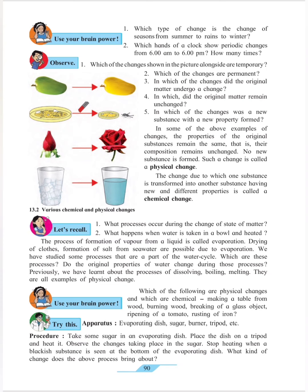The process of formation of vapor from a liquid is called evaporation. When you heat water, some amount of water is converted from liquid state to gaseous state — that is water vapor, and the process is called evaporation. Evaporation occurs during the drying of clothes and in the formation of salt when seawater is converted into salt — all of this is possible because of evaporation.